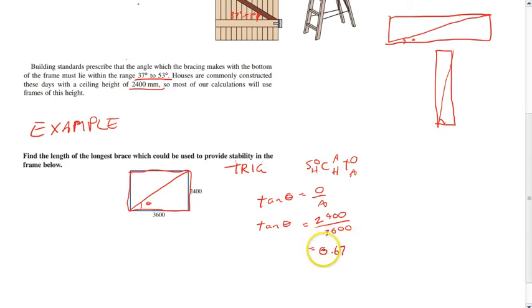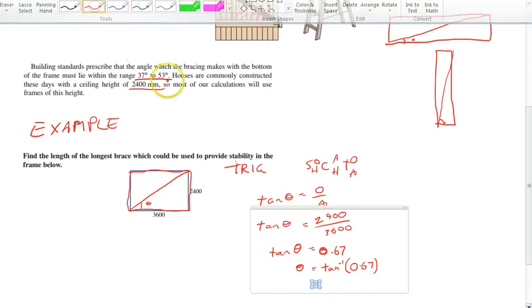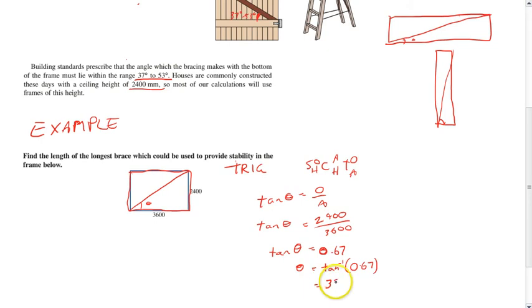That's 0.67. After that, we know tan θ equals 0.67, you're going to have to use shift-tan to figure out what θ is. Shift-tan moves over to the other side, 0.67. Type that into your calculator and you get an angle of 33.7 degrees.